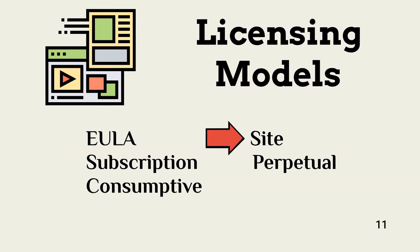A site license is usually more cost effective. It enables an organization to purchase a license that covers all intended users, with costs depending on the negotiated number of potential users. This approach largely avoids penalties associated with copyright violations, though there is usually some method of tracking actual users and a procedure for managing decreases or increases in license costs. Subscription licenses are renewed periodically instead of simply buying user licenses. Subscription licenses can apply to specific users or at the enterprise level, and like site licenses, user review and license adjustments are usually included in the agreement.